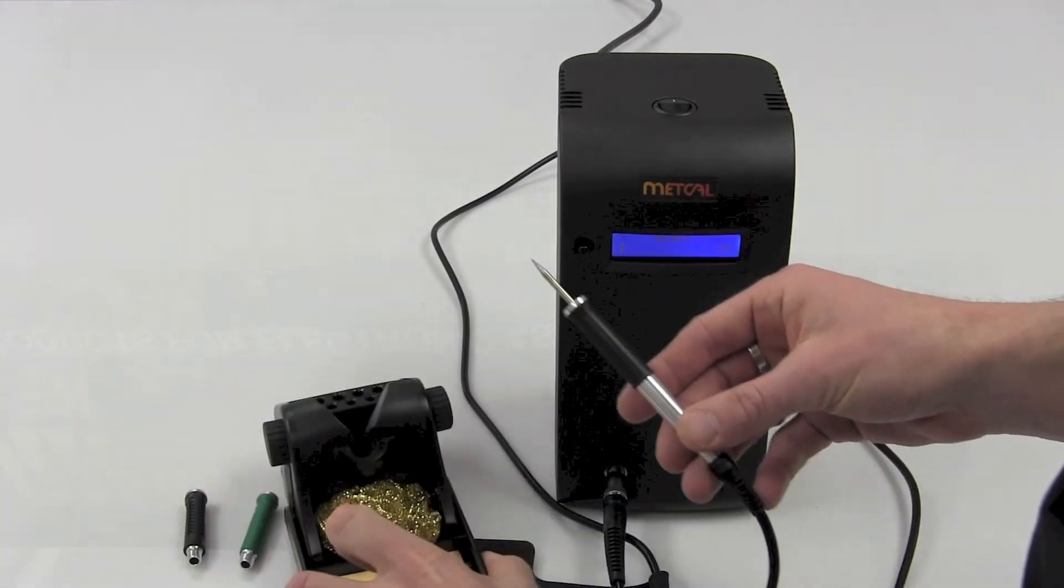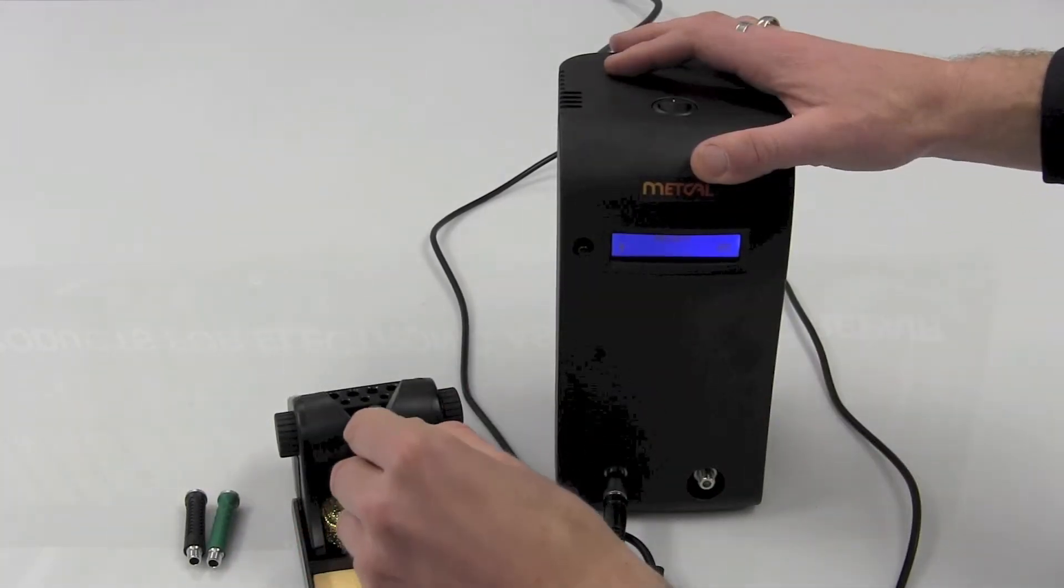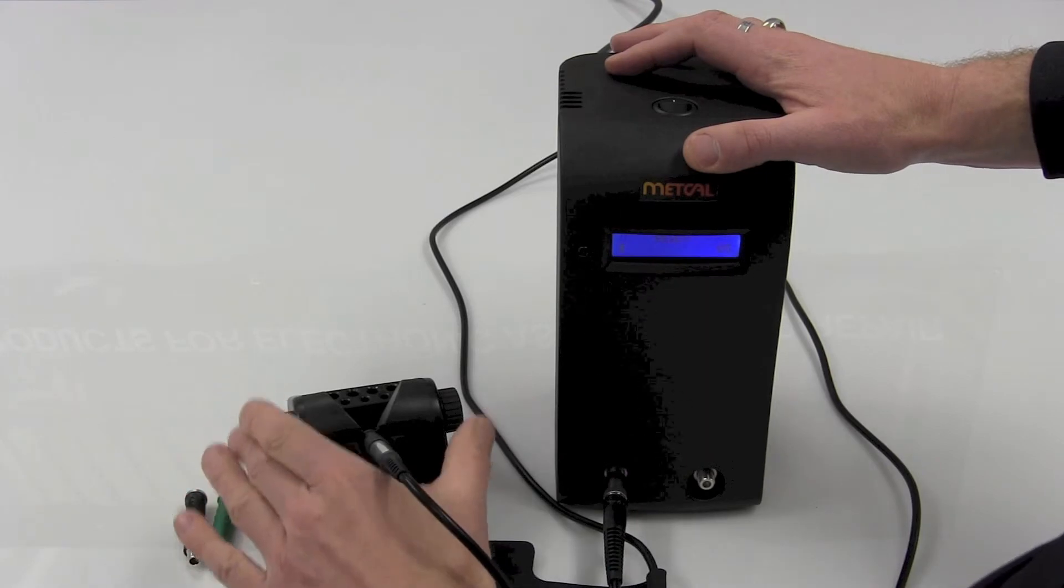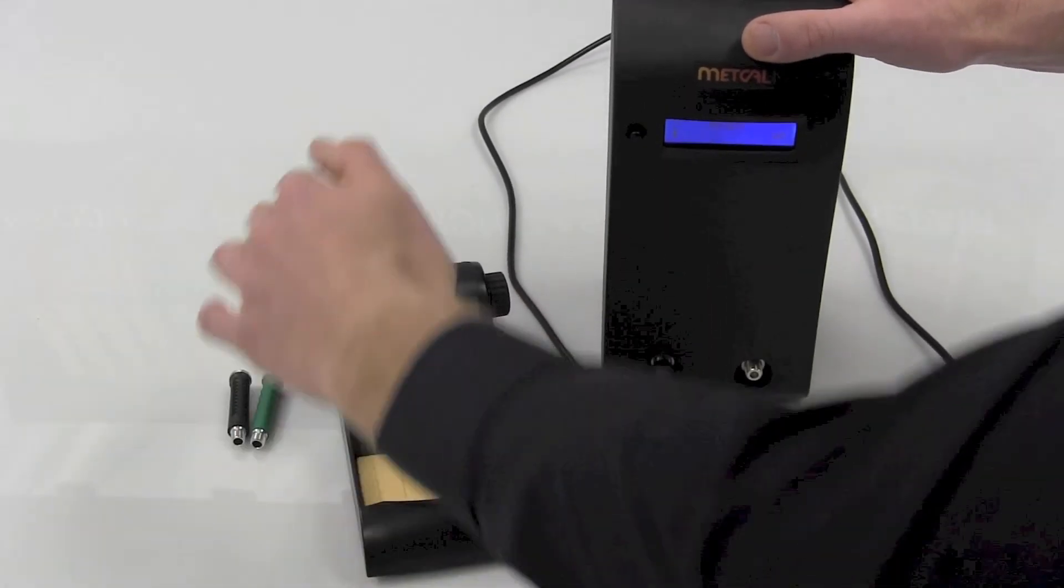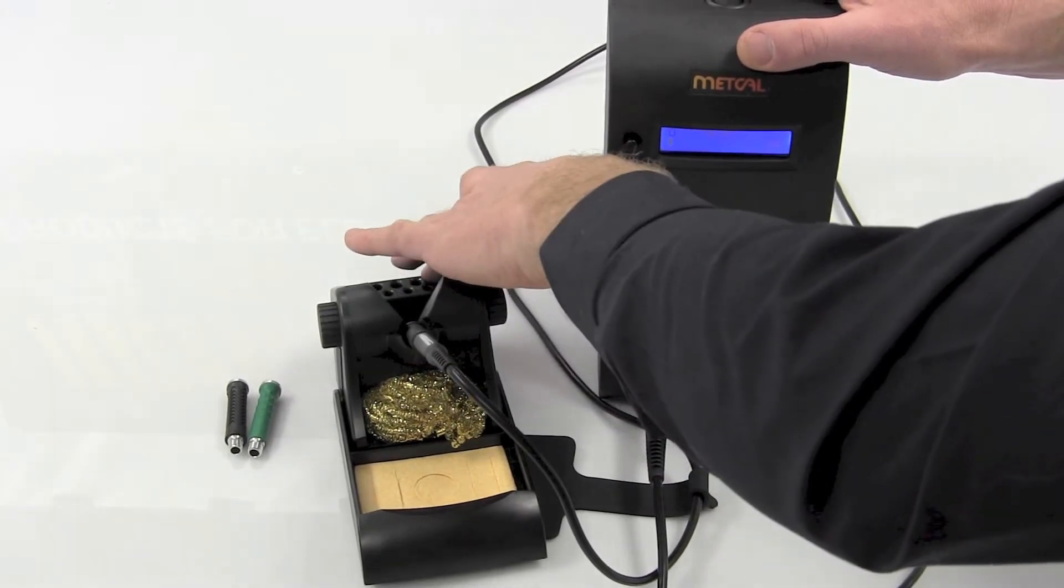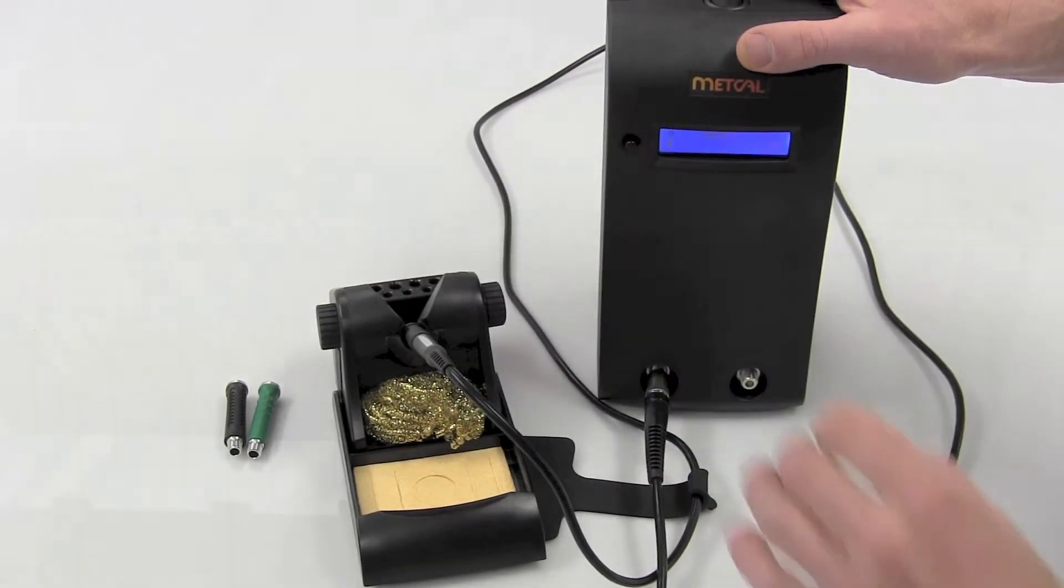The new stand is, like I said, a tip stand. And you'll see as soon as it goes into here, that is now going to power down your iron. You've got your cleaning wire, your cleaning sponge, and then in the back you've got this integrated tip stand for the unit.